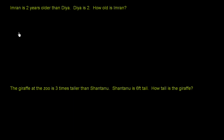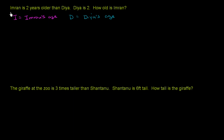Let's use some letters to represent Imran and Diyah's ages. Let's say that I is equal to Imran's age, and D is equal to Diyah's age. So given that, what does this first sentence tell us? Imran is two years older than Diyah, so Imran's age is going to be equal to Diyah's age plus two. That's what this first sentence tells us: I = D + 2.